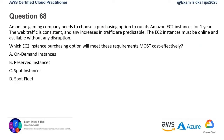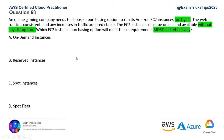Question number 68. An online gaming company needs to choose a purchasing option to run its Amazon EC2 instance for one year. The traffic is consistent and increases in traffic are predictable. The EC2 instance must be online and available without any disruption. The solution also has to be cost-effective. The keywords are: instance needed for one year, traffic is predictable, servers must be online without any disruption, and it must be cost-effective.